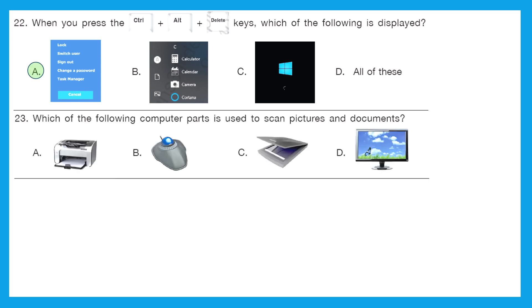Question 23: which of the following computer parts is used to scan pictures and documents. And out of A, B, C, D, that is printer, mouse, scanner and monitor. Option C is the right answer because that is a scanner.